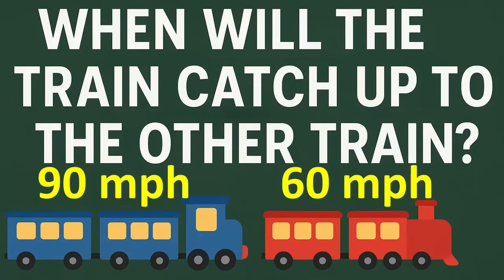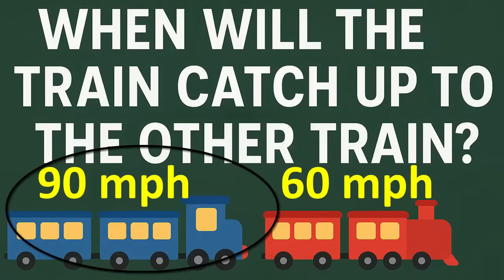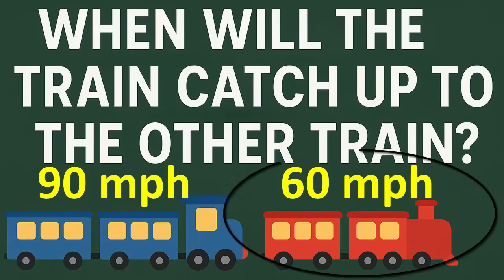So we have two trains here. They are leaving the station. This train right here, going 60 miles per hour, has left the station and it's been traveling for one hour. Now this train right here, going 90 miles per hour, is basically on a parallel track. So the question is, when is this train going to catch up to this train right here?